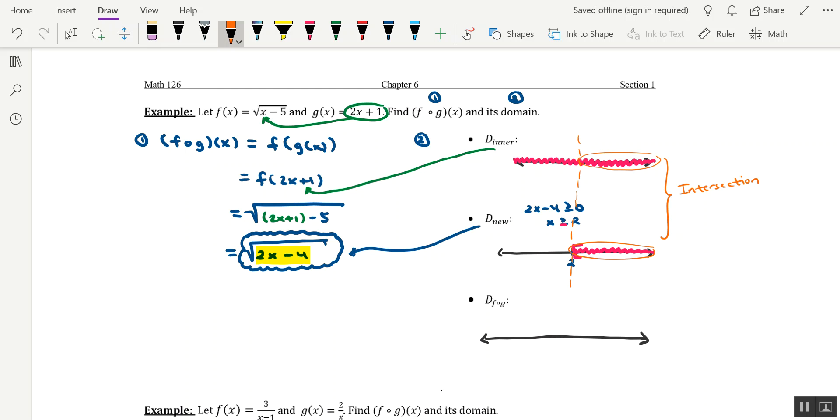So long story short, the domain for this composition function would consist of x values that start at 2 and are larger than 2. So any value of x that's greater than or equal to 2 is going to be the domain of our composition function. So in interval notation, that's bracket 2, comma, infinity.